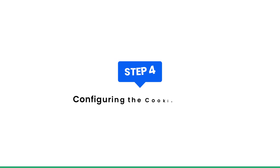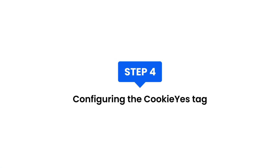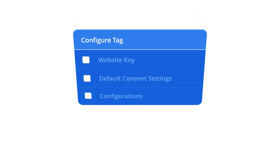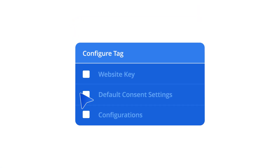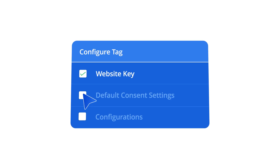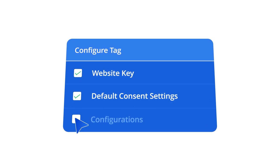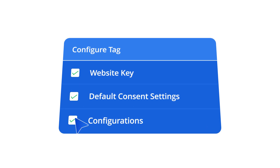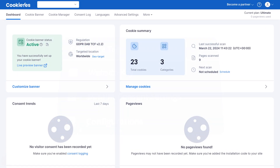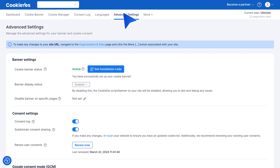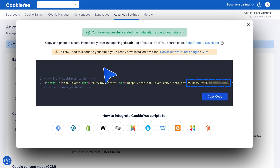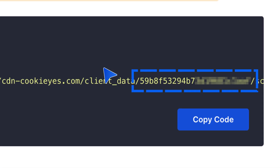Step 4: Configuring the Cookie Yes Tag. Configure the tag by entering your website key, setting the default consent settings, and other configurations. Log into your Cookie Yes account and go to Advanced Settings. Copy the website key from the SRC attribute.